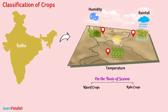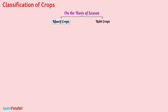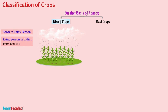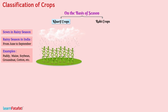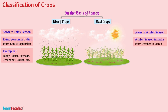Kharif crops and Rabi crops. The crops which are sown in the rainy season are called Kharif crops. In India, the rainy season is from June to September. Some Kharif crops are paddy, maize, soybean, groundnut, and cotton. The crops which are sown in winter season are called Rabi crops. In India, winter season is from October to March. Some Rabi crops are wheat, gram, pea, mustard, and linseed.